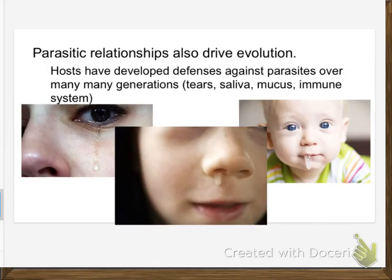Here's the thing: parasitic relationships drive evolution. Guess why you have an immune system? Because for the entire history of hominids — human-like species — on the planet, things have been trying to get to you or your ancestors. They've been trying to get your blood, live in your body, eat your dead skin, make you sick, use your resources. Just like the arms race with predators — predators get better, prey gets better — you have evolved an immune system and defense mechanisms to keep those parasites at bay.